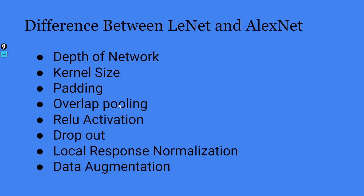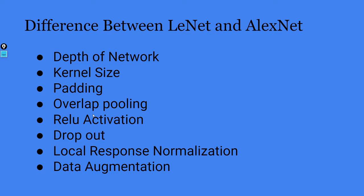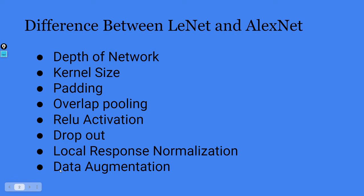Overlapping pooling is another feature. In LeNet, average pooling was used, but in AlexNet, max pooling has been introduced, which is overlapping. I'll explain how that is helpful. Additionally, ReLU activation function has been used here instead of tanh, which was introduced in 1998 in LeNet. Dropout and local response normalization are also used in this architecture.